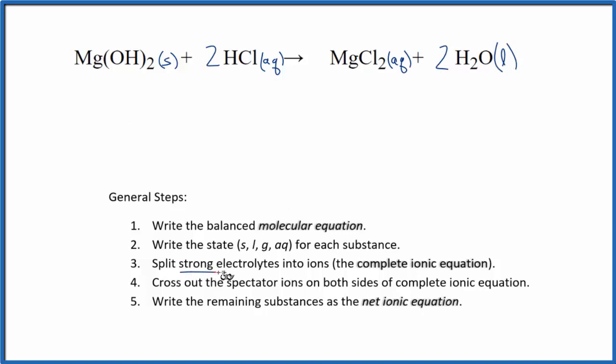So now we're going to split the strong electrolytes into their ions. So when we look at magnesium hydroxide, it's not a strong electrolyte. So we're not going to split that apart into its ions, we're just going to write Mg(OH)₂. And I'll write the states at the end, I won't write them in now.